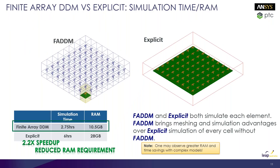This slide shows how you can speed up simulation time and reduce RAM requirements using the finite array domain decomposition method. You only need to define a unit cell and replicate it, which has a significant advantage over explicitly solving the entire array as a single element.